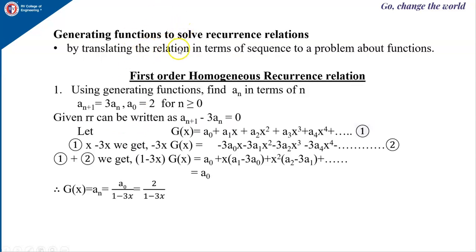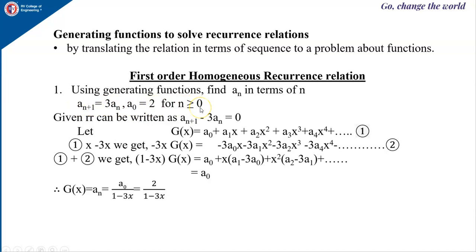Now we will see how generating functions can be used to solve recurrence relations, by translating the relation in terms of a sequence to a problem about functions. Let us see how to solve a first order homogeneous recurrence relation using generating functions. Suppose a_{n+1} = 3a_n with a_0 = 2, for n ≥ 0.